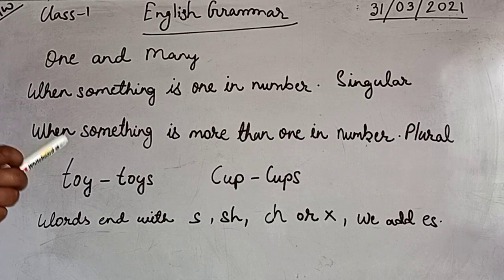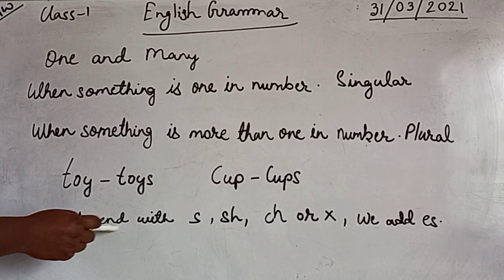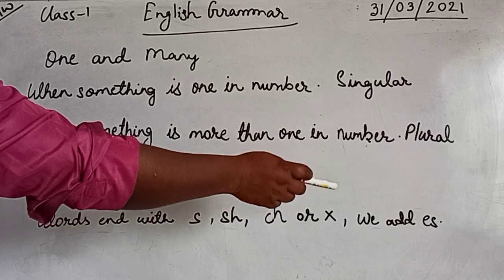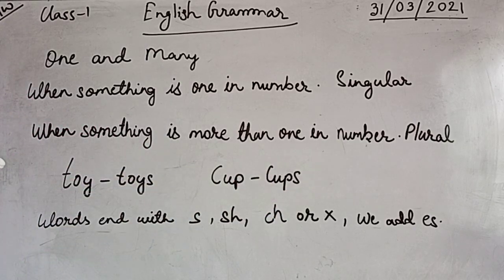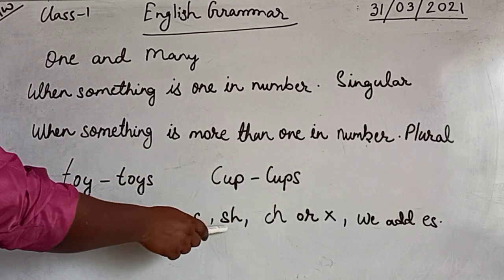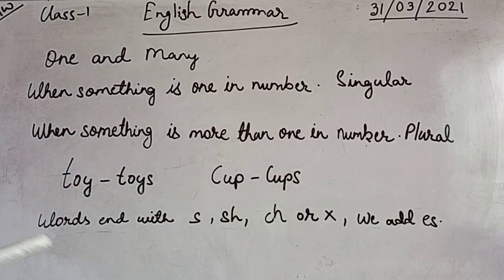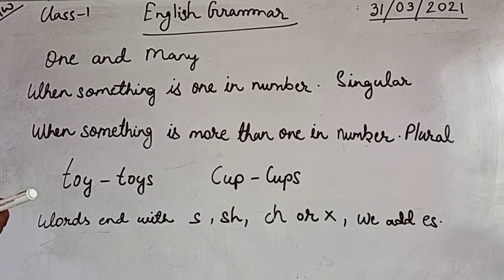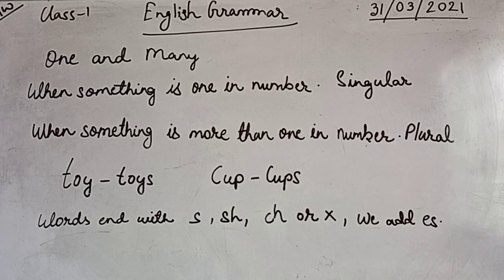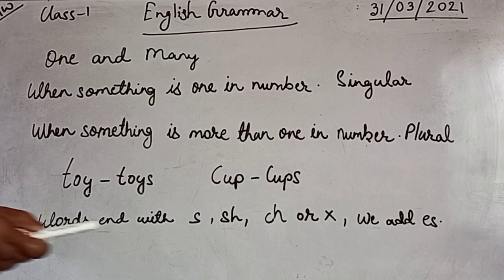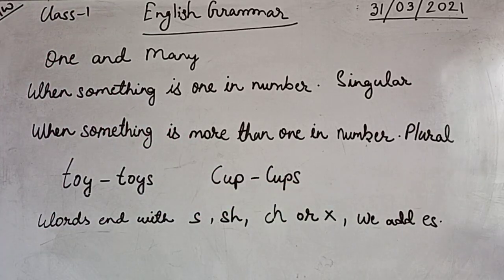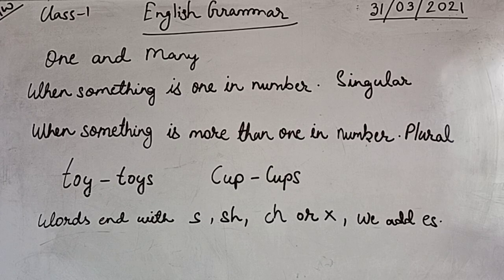There are many words which end with s, sh, ch, or x, like fox and church. These are words with endings s, sh, ch, or x. To make them plural, we just add 'es' to make plural.